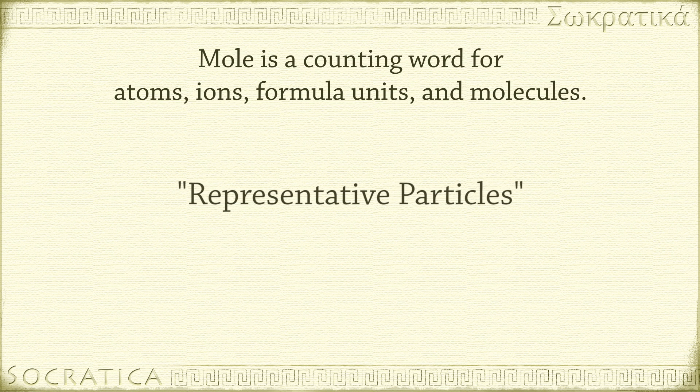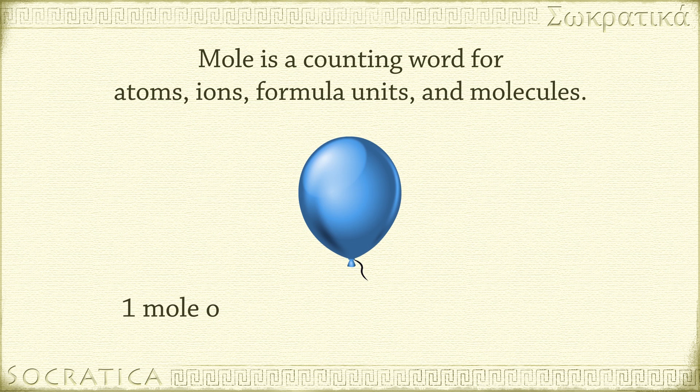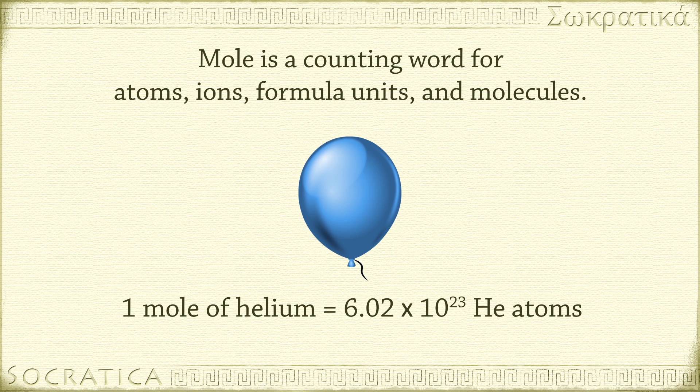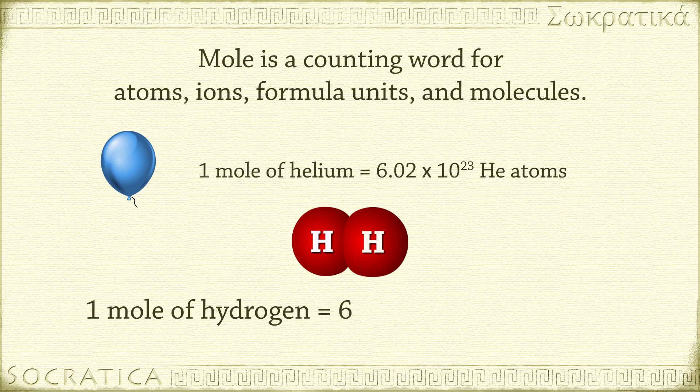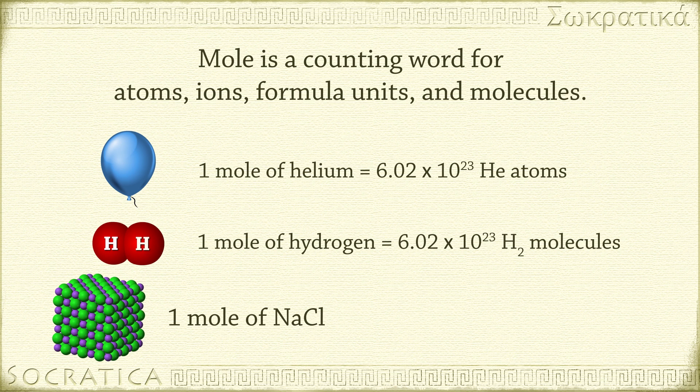One mole of helium is 6.02 times 10 to the 23rd atoms, because helium is atomic. Hydrogen is molecular, and it exists in nature as a molecule of H2. So when we say one mole of hydrogen, we mean 6.02 times 10 to the 23rd molecules of H2. One mole of NaCl means 6.02 times 10 to the 23rd formula units, because NaCl is an ionic compound.